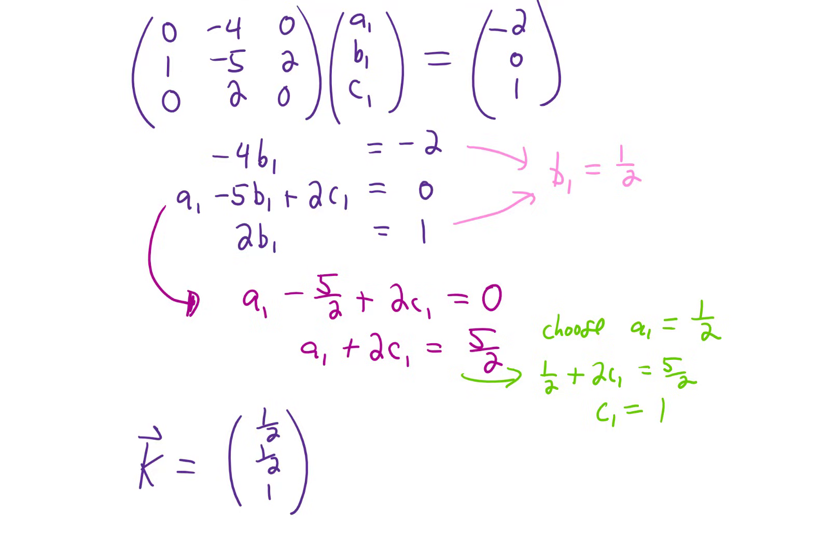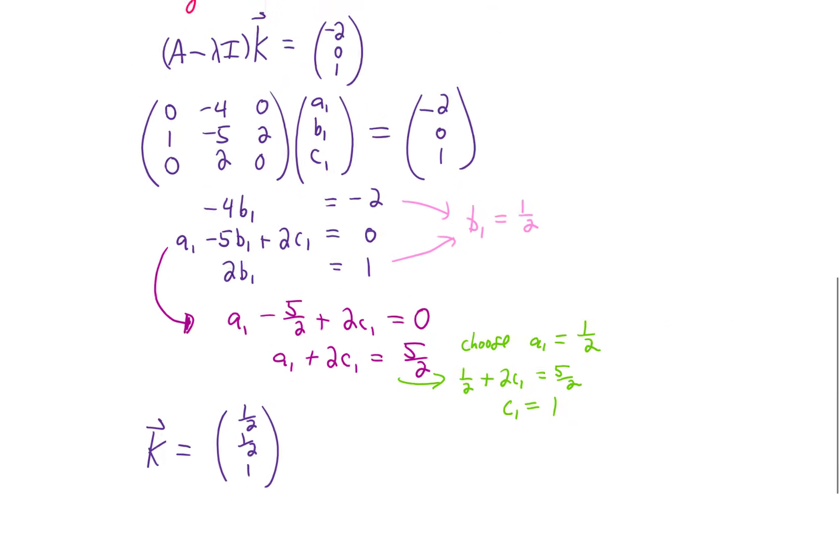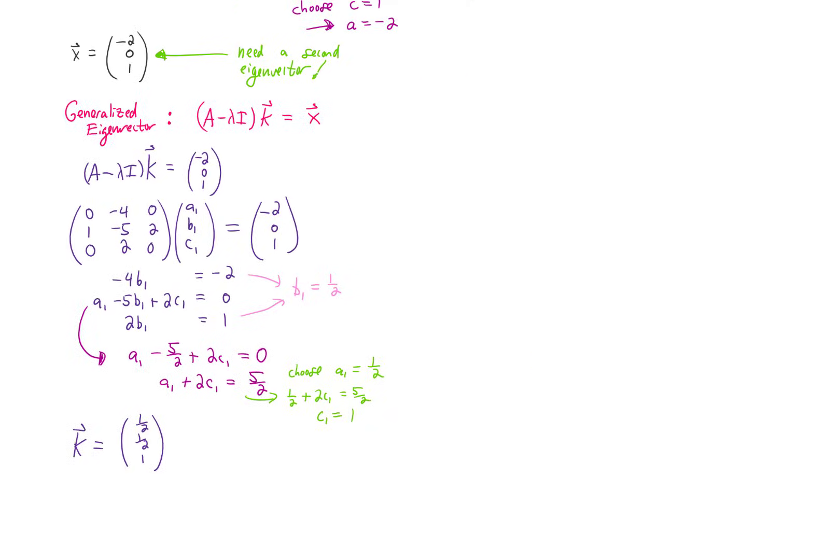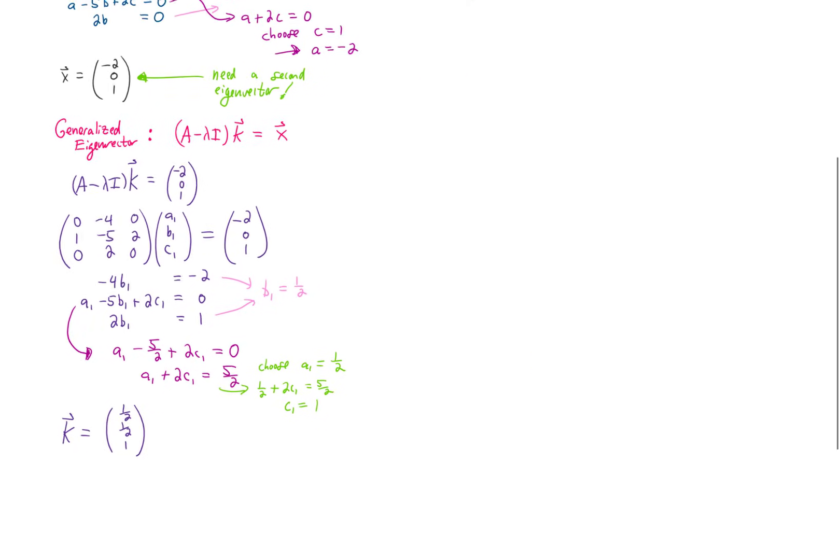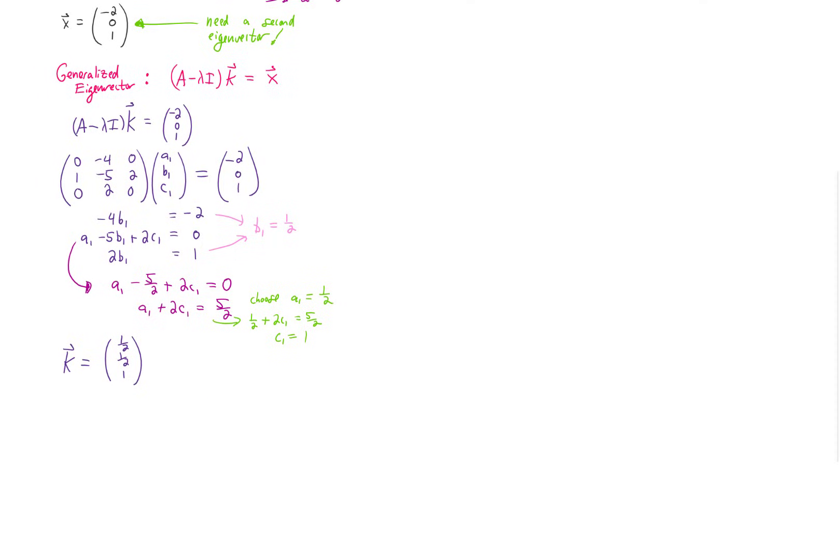And you very well may be wondering, what are we supposed to do with that generalized eigenvector? Well, the answer is we have some forms for solutions to our original problem based on our eigenvector and our generalized eigenvector. Solution one is pretty typical. We just take our regular eigenvector and multiply it by e^(λt). Solution two looks a little bit different. We take our first solution and multiply it by t, but then we add to that the generalized eigenvector times e^(λt).